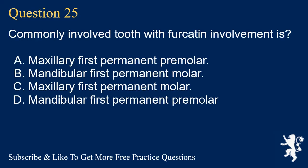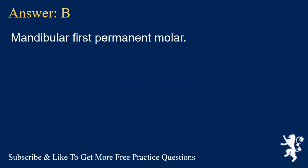Question 25. Commonly involved tooth with furcation involvement is? A. Maxillary first permanent premolar. B. Mandibular first permanent molar. C. Maxillary first permanent molar. D. Mandibular first permanent premolar. Answer: B. Mandibular first permanent molar.